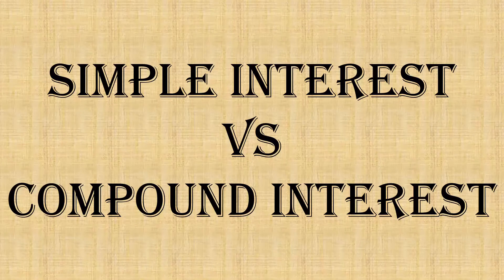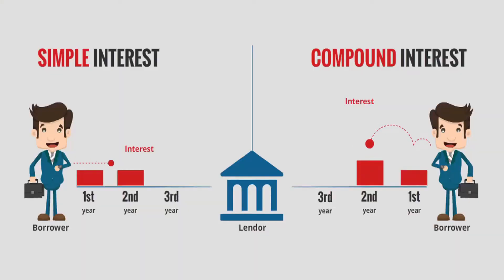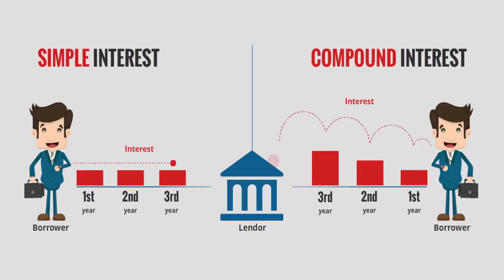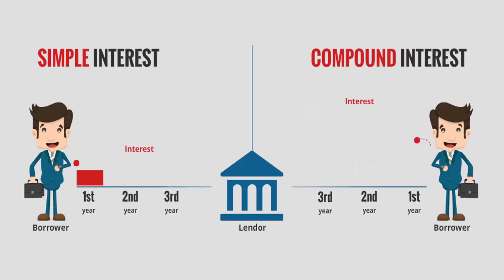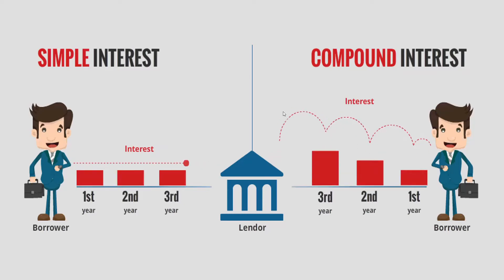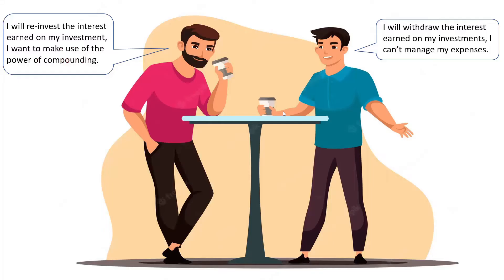Before we move further, let us look at the difference between simple interest and compound interest. Simple interest is calculated on the principal or original amount of investment made, and compound interest is calculated on the principal amount and the accumulated interest of previous periods, and thus can be regarded as interest on interest. To understand, let us look at an example where two friends, Ram and Shyam, both invest Rs. 10 lakhs for 30 years at 10% compounded annually. However, while Ram opts for withdrawing the interest earned every year to help him meet his expenses, Shyam opts to reinvest this interest so that he can avail the benefits of compounding.